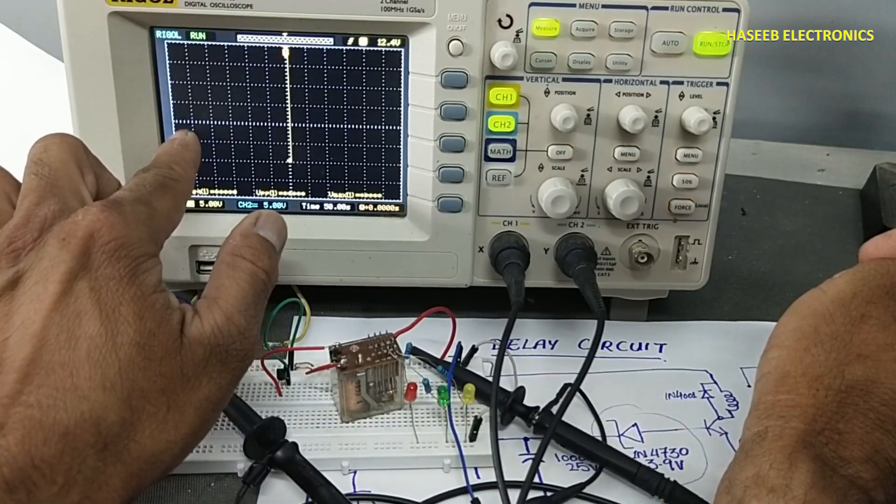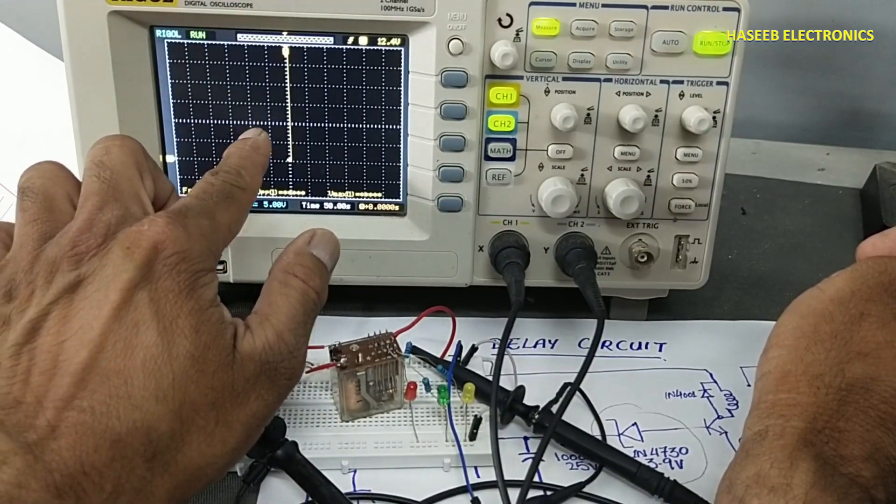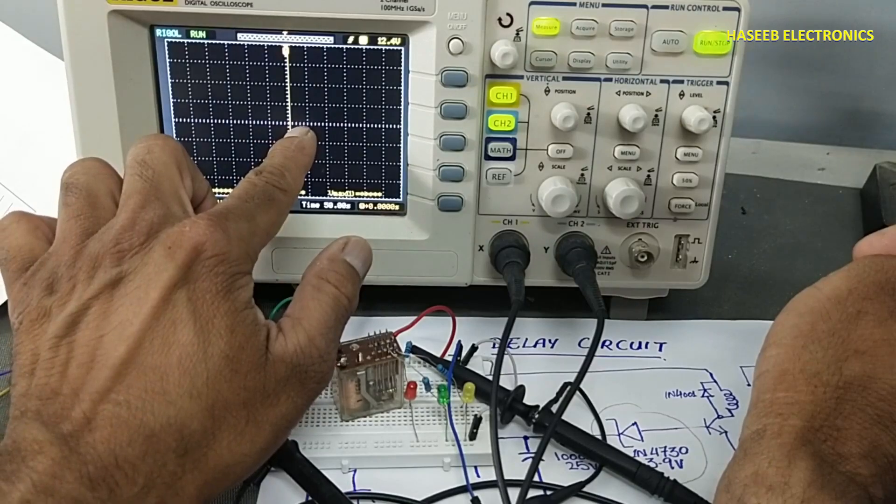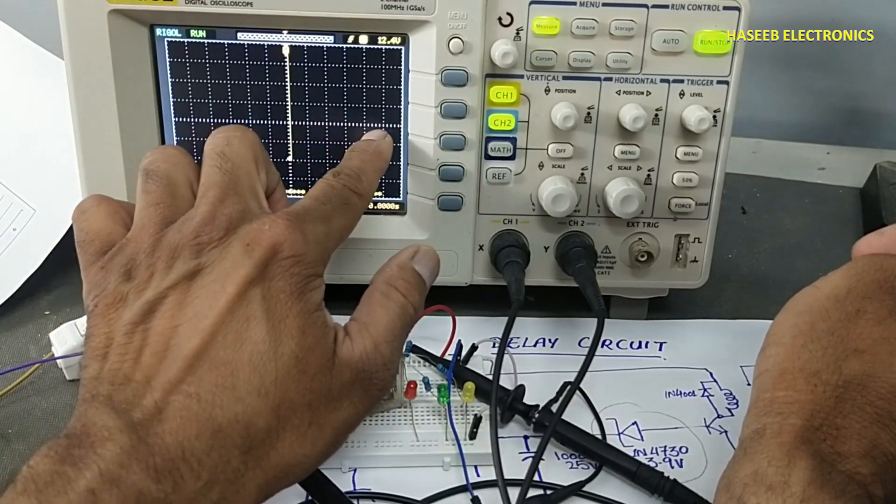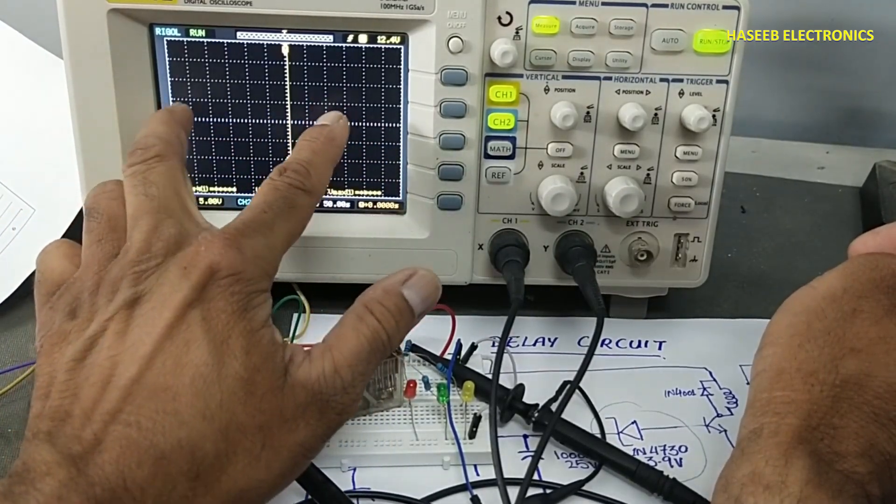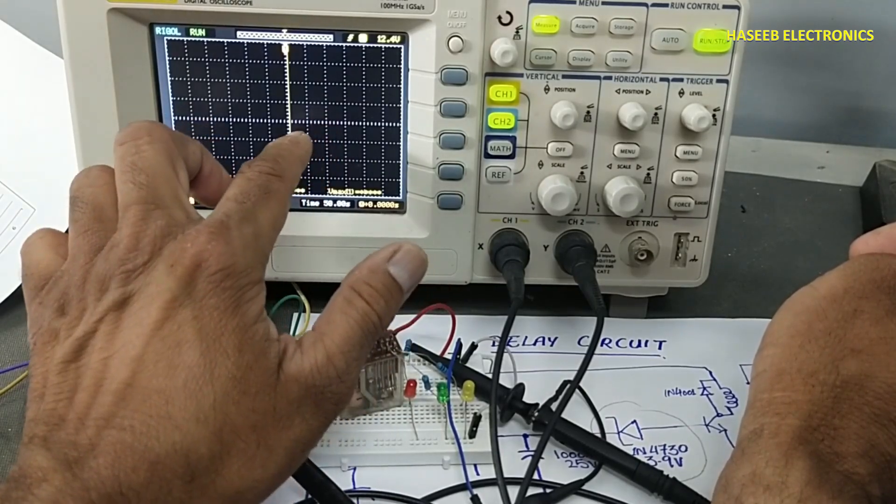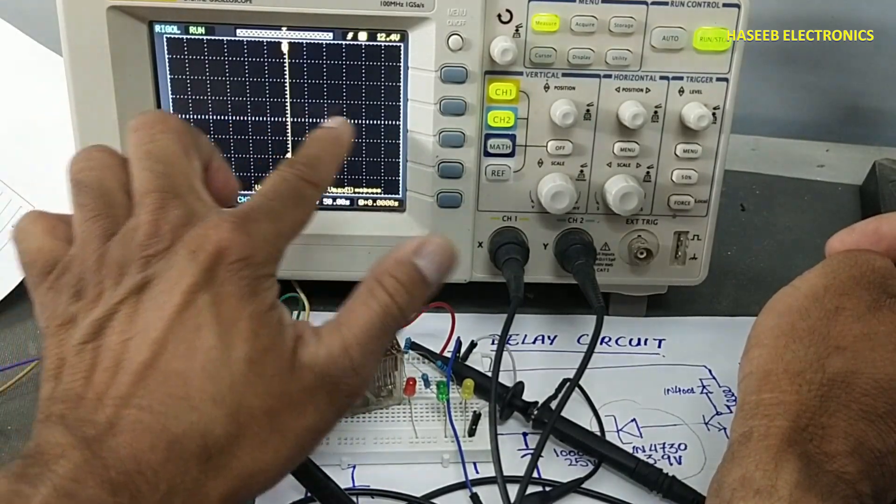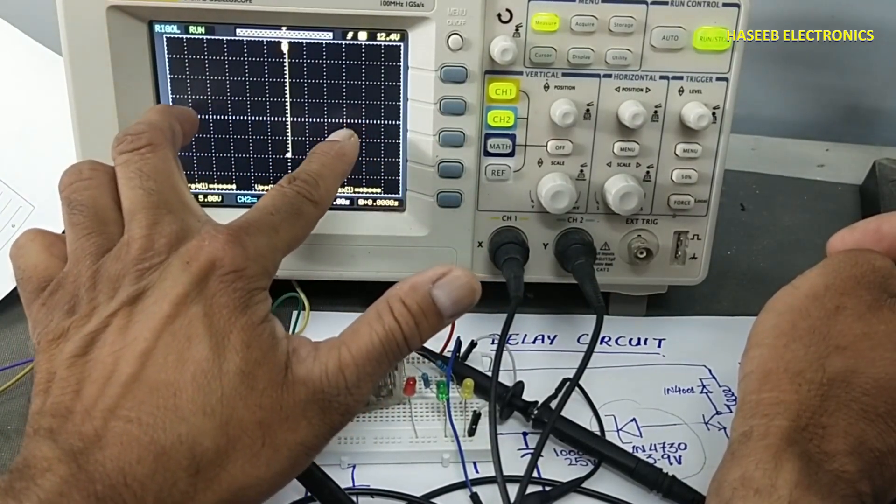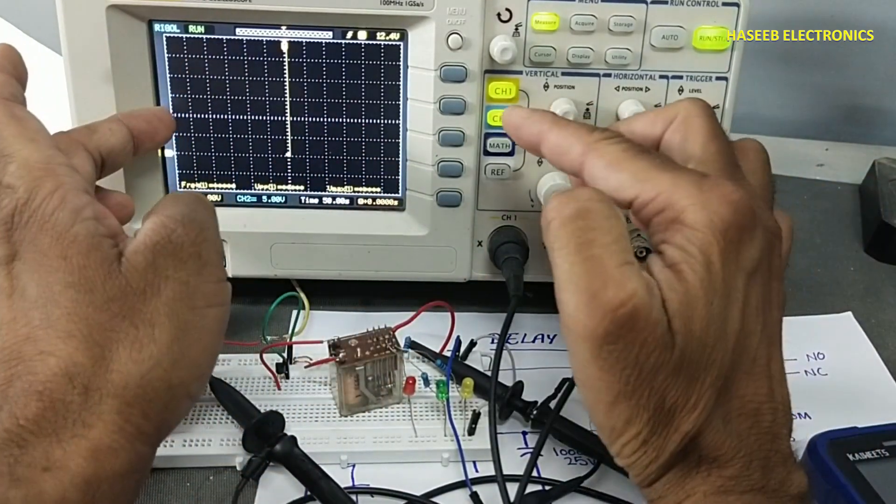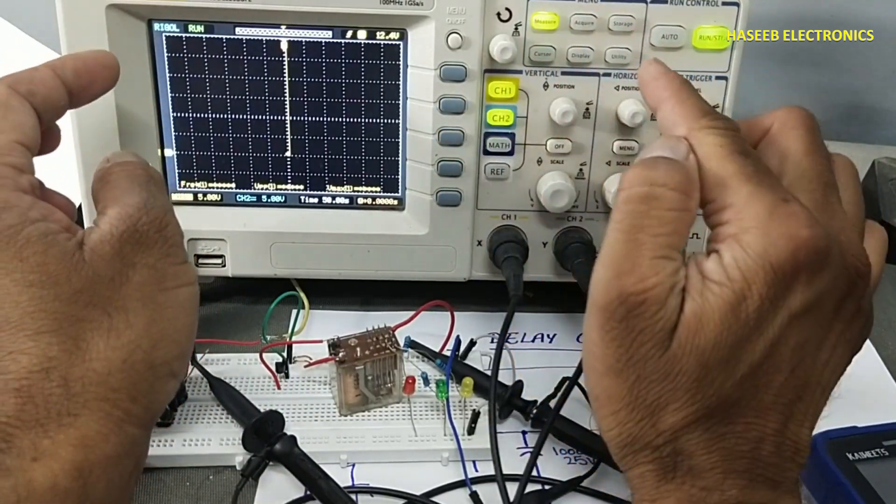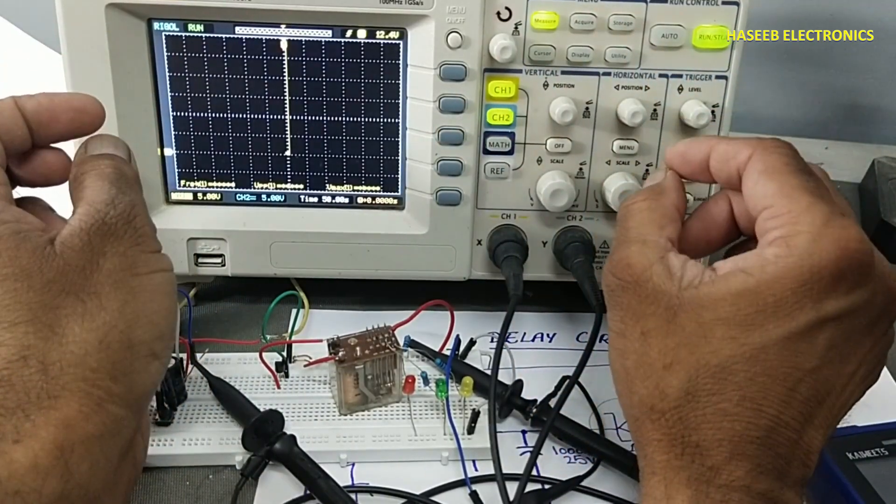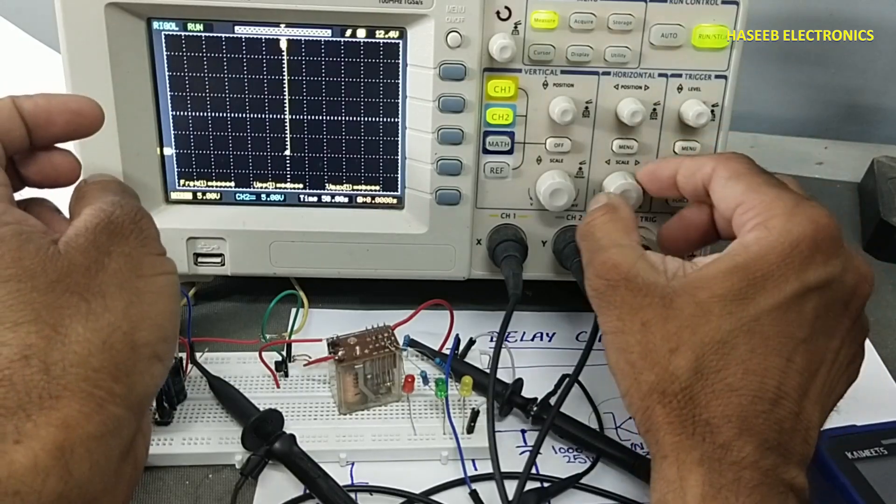When we select 50 seconds, this oscilloscope has 12 squares. 12 multiply by 50 becomes 600 seconds. So we can say this oscilloscope can record up to 10 minutes long waveshape.